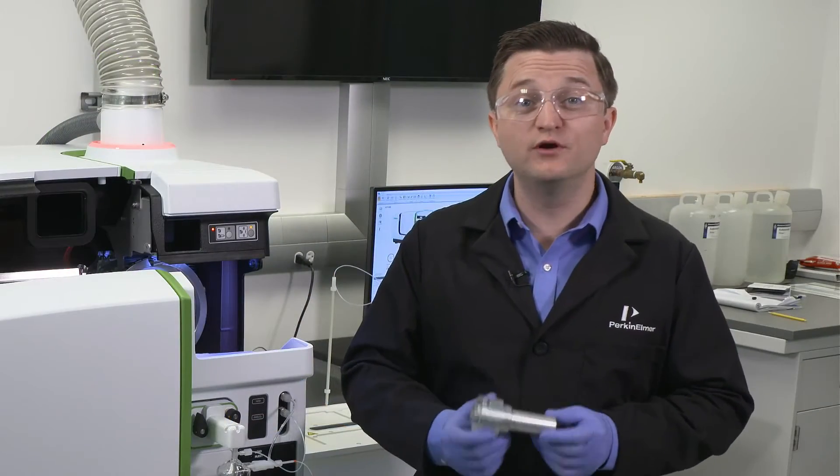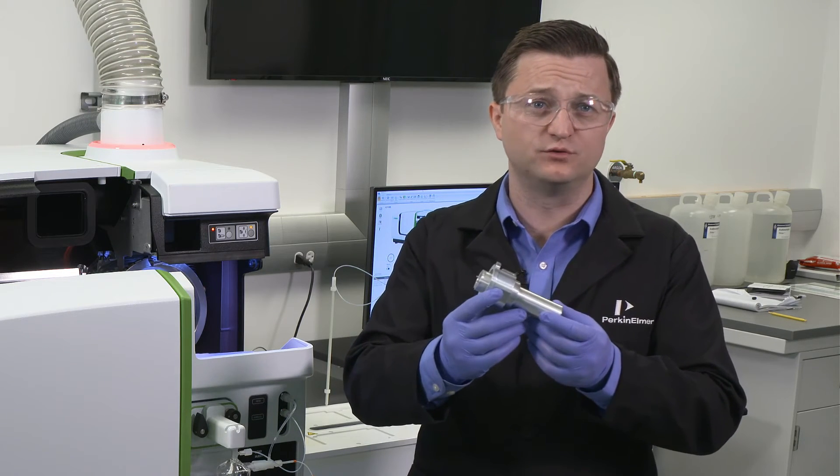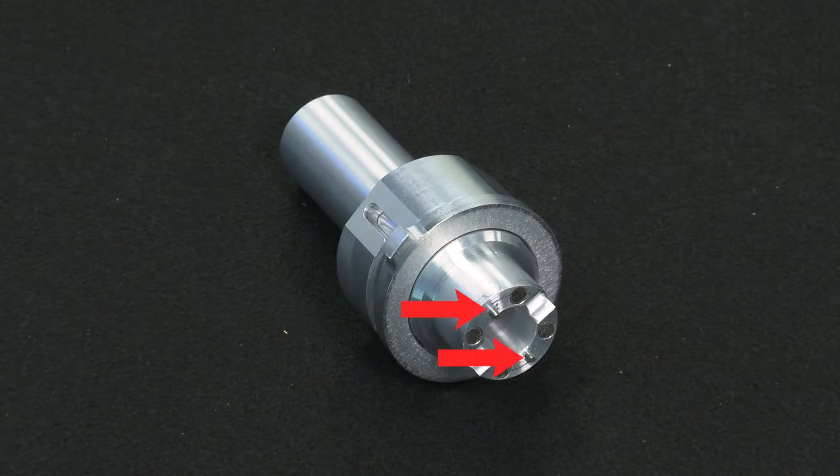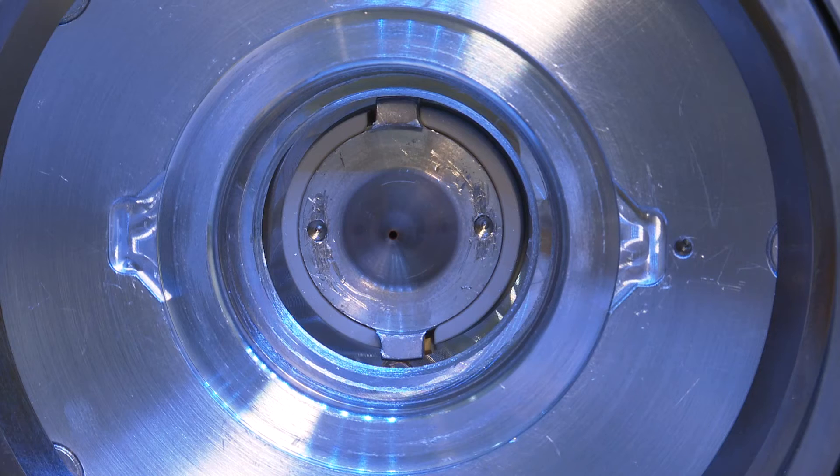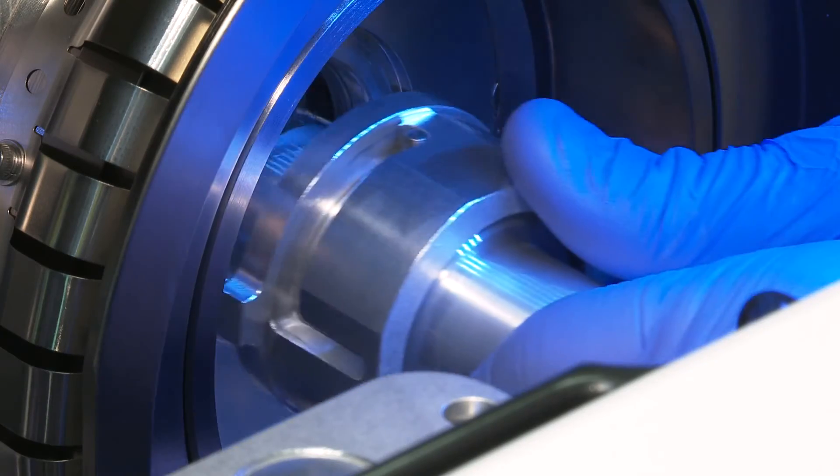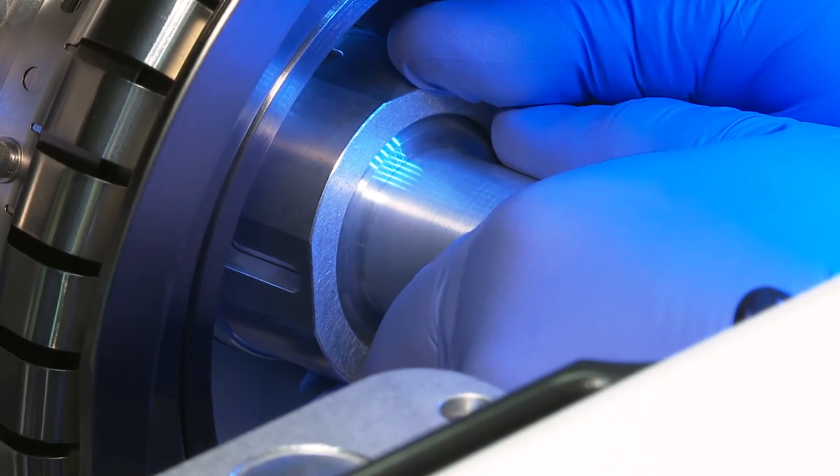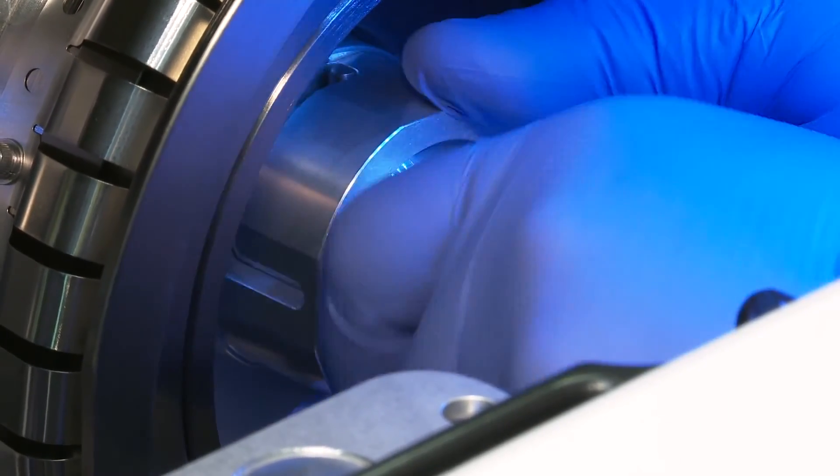Now, to remove the hyper skimmer omni ring assembly, we use the hyper skimmer removal tool that I have here. Line up the hyper skimmer removal tool pins with the hyper skimmer. Push in the hyper skimmer removal tool until the pins engage the holes. This may take some practice to master.